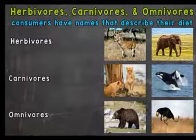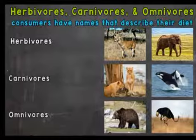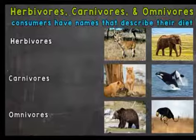Consumers have names that describe their diet. Herbivores can eat only grass-type food. Carnivores can eat only meat — they don't eat any plant items and can only eat meat or other animals. Omnivores eat both grasses and meats; they can eat both grass and meat.